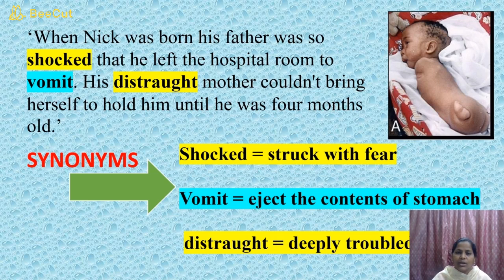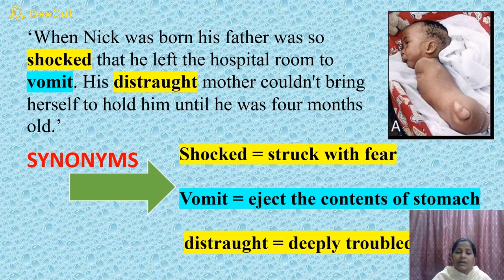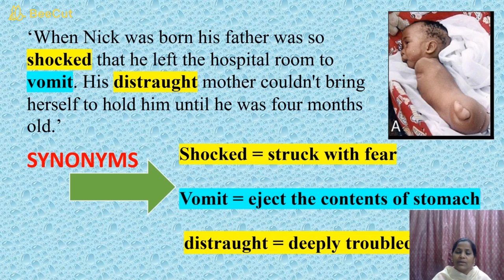His distraught mother couldn't bring herself to hold him until he was four months old. The meaning of 'distraught' is deeply troubled, deeply depressed — hurt in mind and heart. She was looking at the boy born without limbs — neither hands nor legs — and she could not, with that depression, carry or hold Nick for almost four months. Here is the picture of small Nick when he was born.